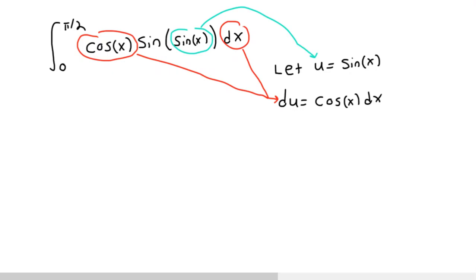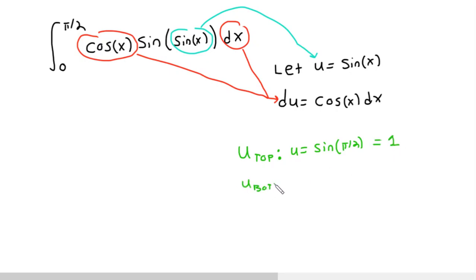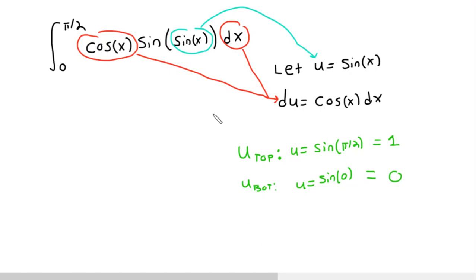One last step: because we're working with a definite integral, we also have to change our limits of integration. Because 0 and pi/2 work for x's, but we need new limits that work with u's. For the upper limit: u equals sine(pi/2), which is just 1. For the lower limit: u equals sine(0), which is just 0. So those are our new limits of integration. You always want to change the limits of integration when making a u-sub on a definite integral.